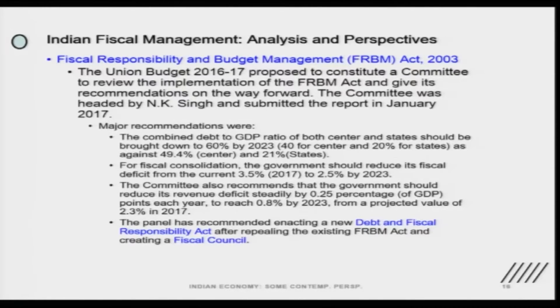The committee mentioned that the combined debt-to-GDP target of both centre and states — which is around 49.4 percent for the centre and 21 percent for the states — should come down to 60 percent total, meaning 40 percent for the centre and 20 percent for the states by 2023. This target was given to the centre plus the states to reduce the debt-to-GDP ratio. In case of a state, it will be the debt-to-GSDP ratio, since we have the gross state domestic product there.